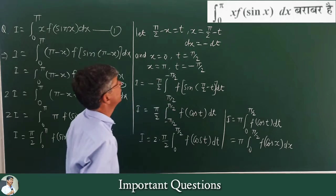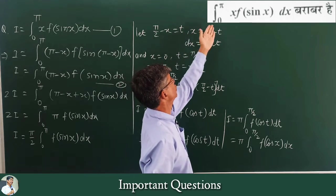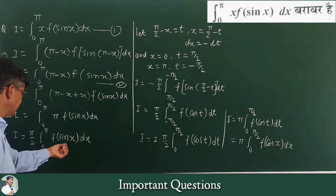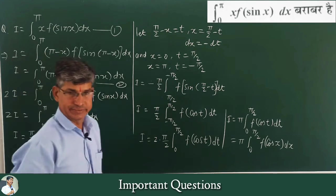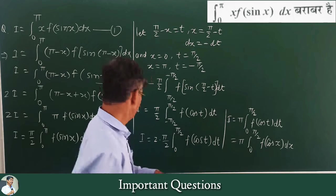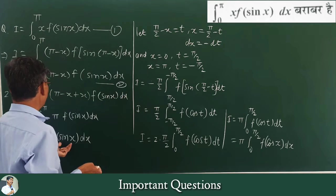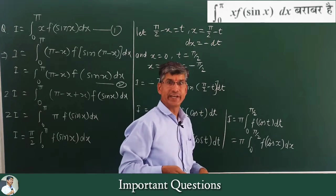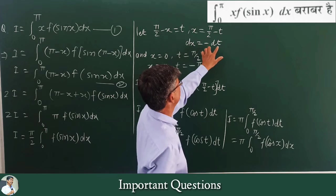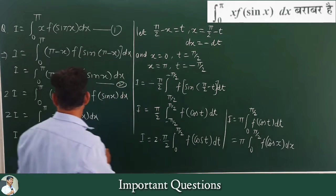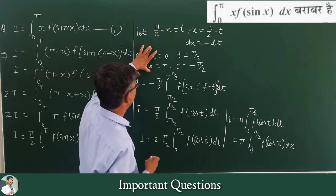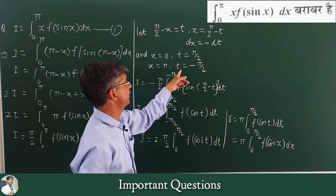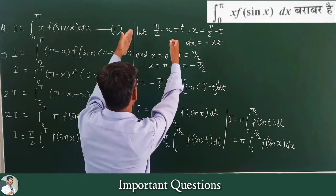To convert sin to cos in the answer, substitute x = π/2 - t, so dx = -dt. When x = 0, t = π/2, and when x = π, t = -π/2. So sin(x) = sin(π/2 - t) = cos(t), and the limits convert from 0 to π into π/2 to -π/2.